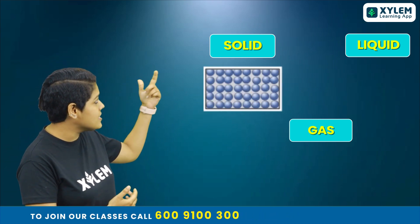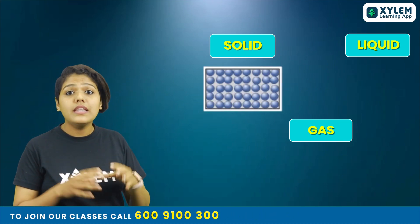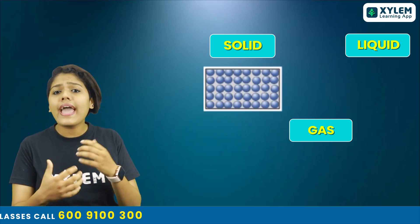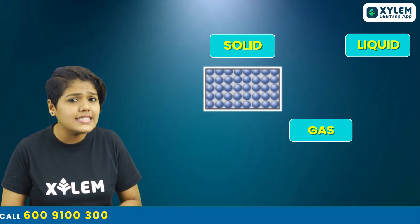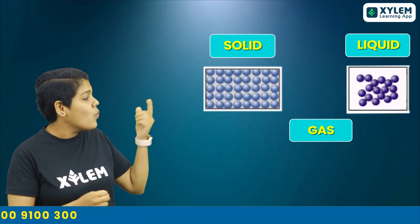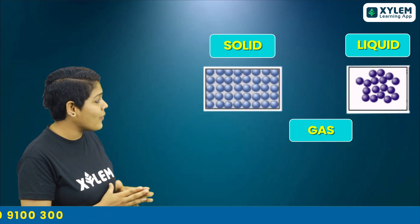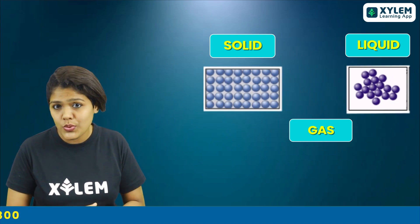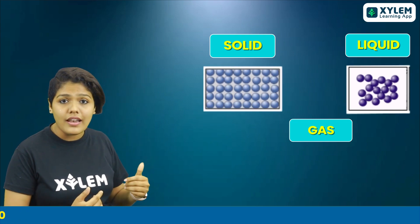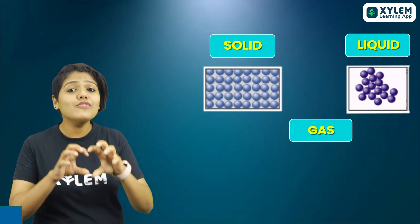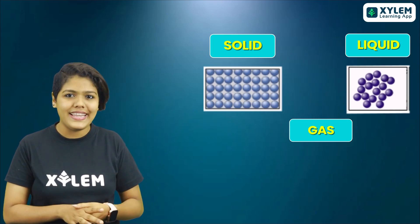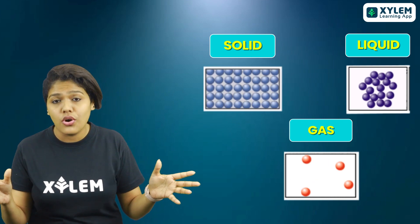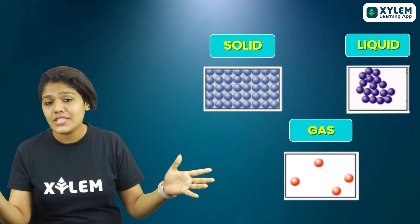Now let's see about the particles. Here you can see solid — the particles are close together, with negligible space between them. In liquids, the particles have space between them compared to solids. In gases, the space is much larger — they are staying apart.